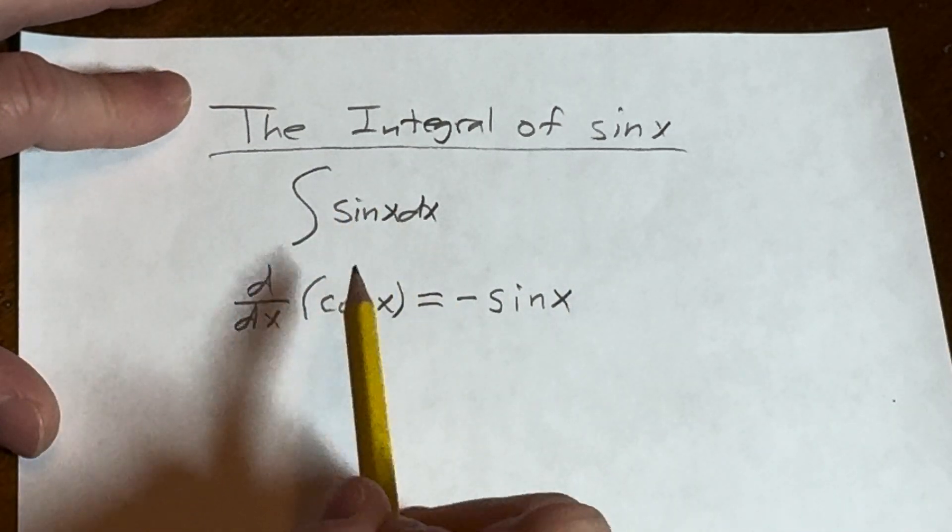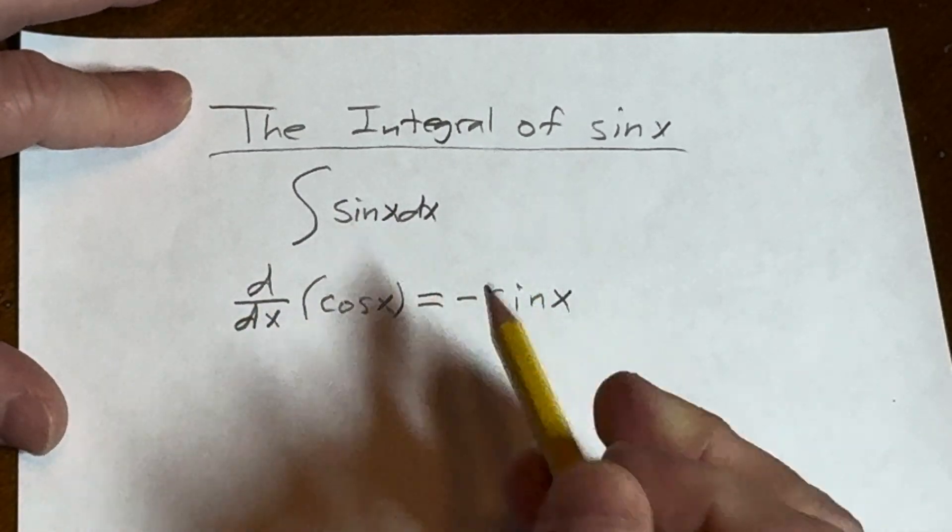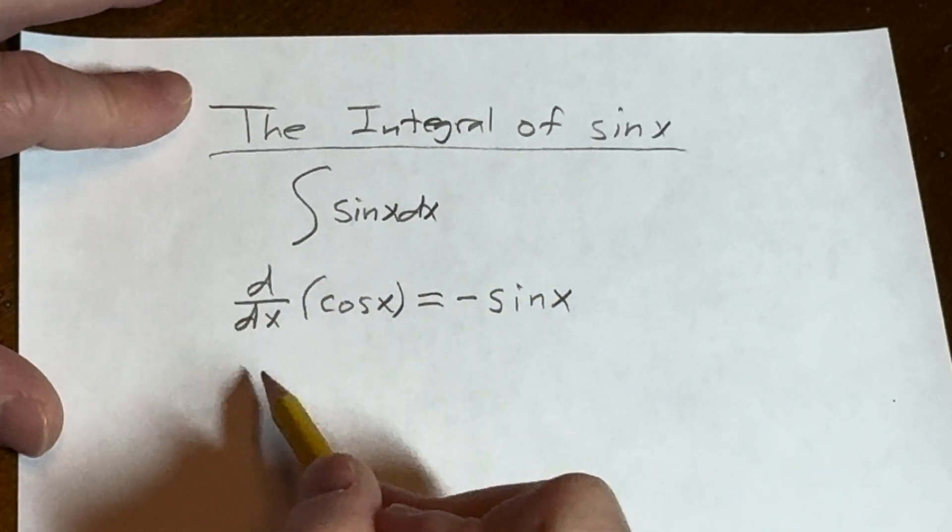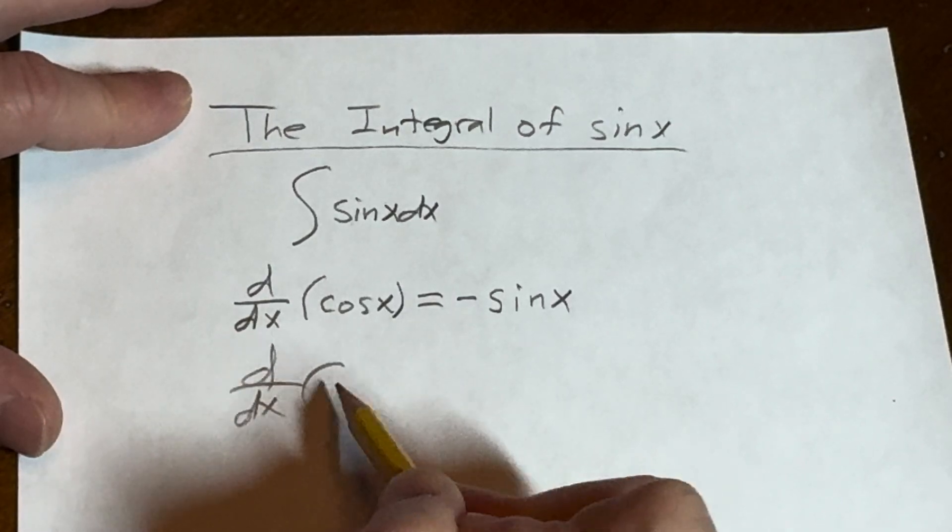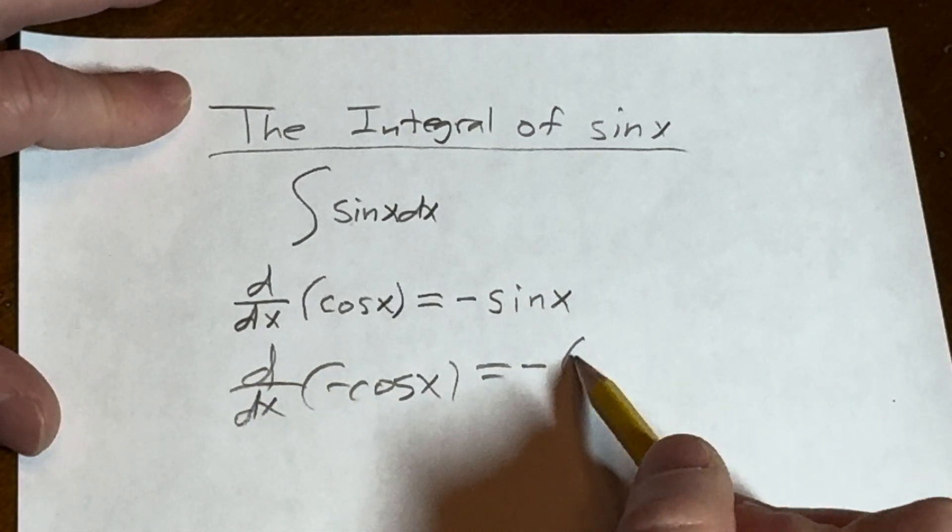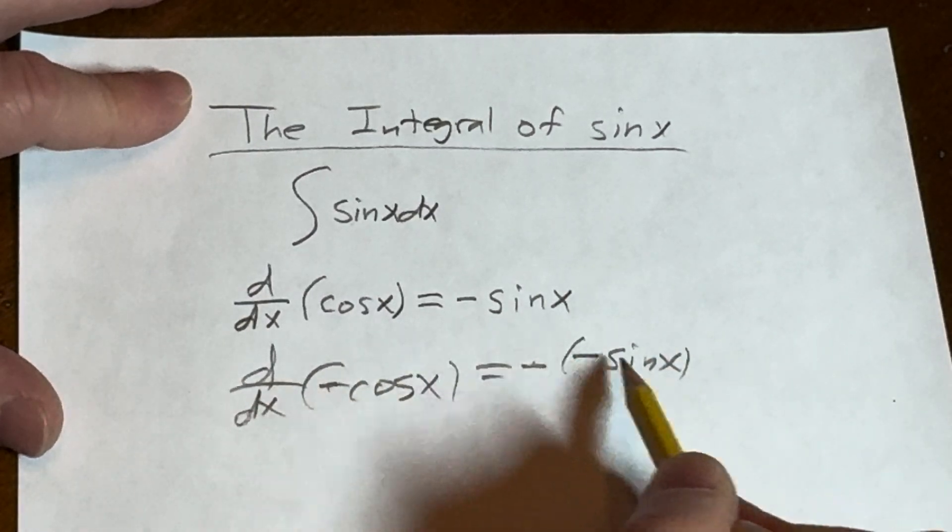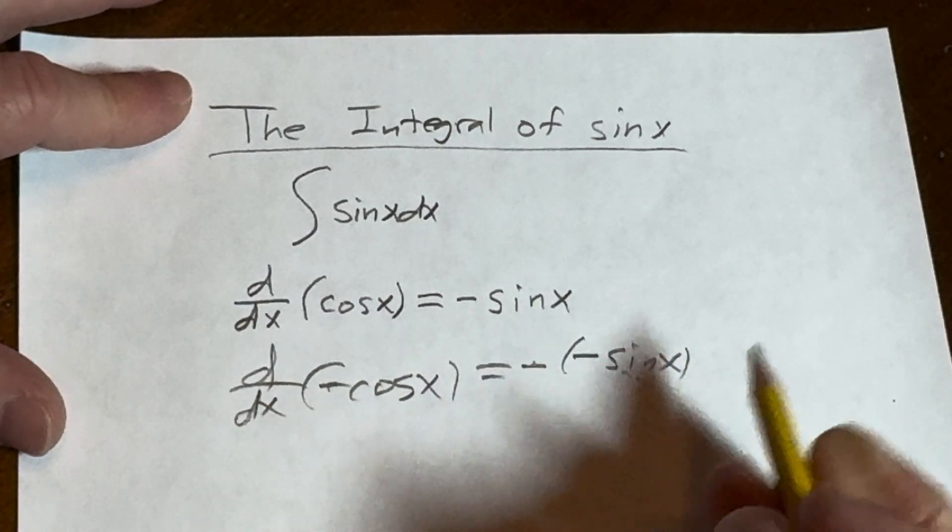But here we don't have a negative, right? You want to get a positive. So how do you get a positive? Well, you add another negative. So if you take the derivative of negative cosine, that's going to be negative, negative sine x. Right, because this negative is from this, and then the derivative of cosine is negative sine x.